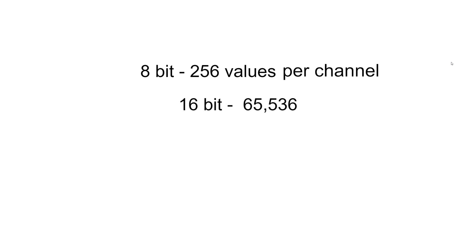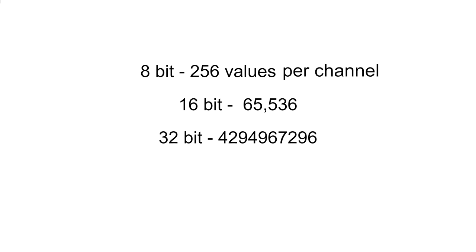16-bit, although it's double the bit depth, can actually hold exponentially more values - 65,536 values - and basically that's a lot more. This is why things like displacement, and sometimes your spec roughness, will be painted in 16-bit because you've got so much more variation and you won't get clamping. Then you get 32-bit, which is a whole lot more values still. Sometimes even 16-bit isn't enough and 32-bit is needed.